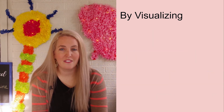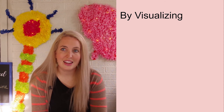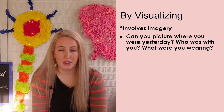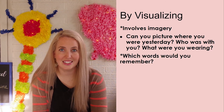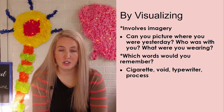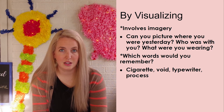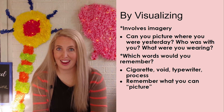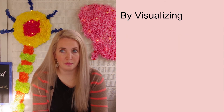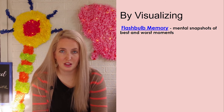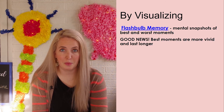The second way we can encode is by visualizing, which includes using imagery. The idea is that we often remember things better when we can picture them — we can close our eyes and envision something. For example, you may remember words like 'cigarette' or 'typewriter' better than words like 'void' or 'process,' because those abstract words can't be pictured the same way. Adding both the language and the imagery seems to increase our overall memory retention.